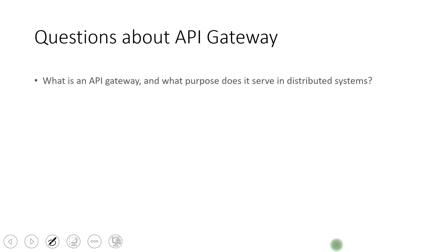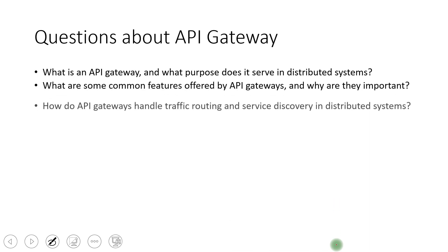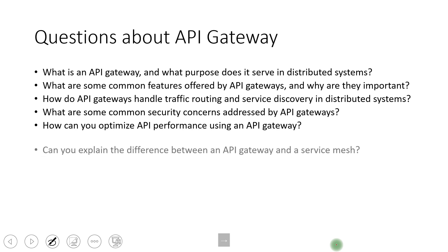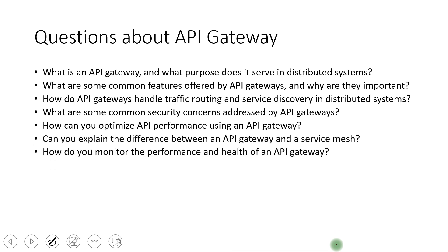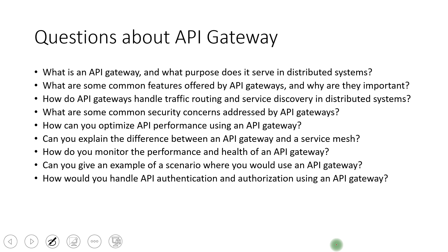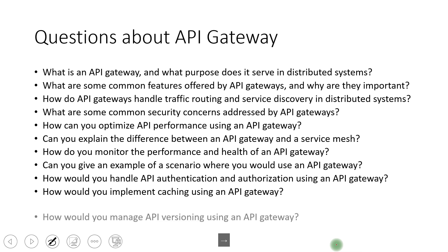For API gateway interview questions: What is an API gateway? What are some common features? How does an API gateway handle traffic routing? How are common security concerns addressed by an API gateway? How do you optimize API gateway performance? Can you explain the differences between an API gateway and a service mesh? How do you monitor performance? Can you give an example of a scenario where you used an API gateway? How do you handle authentication, caching, and rate limiting — and importantly, how are they actually implemented?